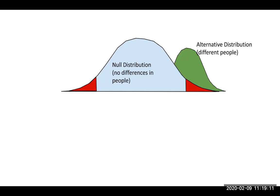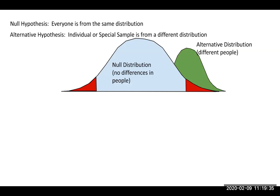This picture from our previous lecture captures the idea where we're trying to decide: are you from the blue distribution or the green distribution? The null hypothesis is the idea that there is no green distribution — that everyone is from the blue distribution, and the green one is kind of a theoretical idea. So our null hypothesis is that everyone is the same. The alternative hypothesis is that the green distribution exists and that the individual or sample we're looking at is from that green distribution.